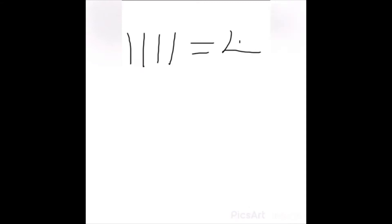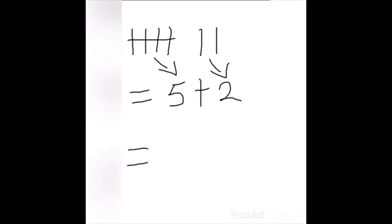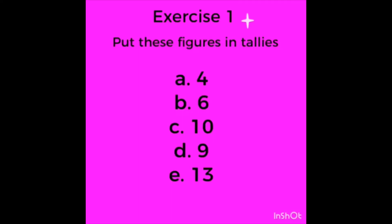Four tallies. One, two, three, four and a crossing tally — five tallies, or let's call this a bunch for now. How do we calculate when there are more than five? A bunch of tallies plus those single tallies. So we calculate like this: five plus one, two — two tallies. Five plus two equals seven.